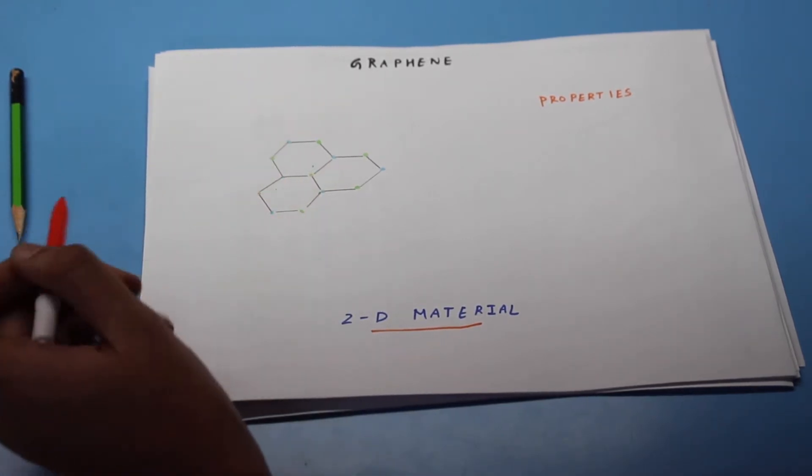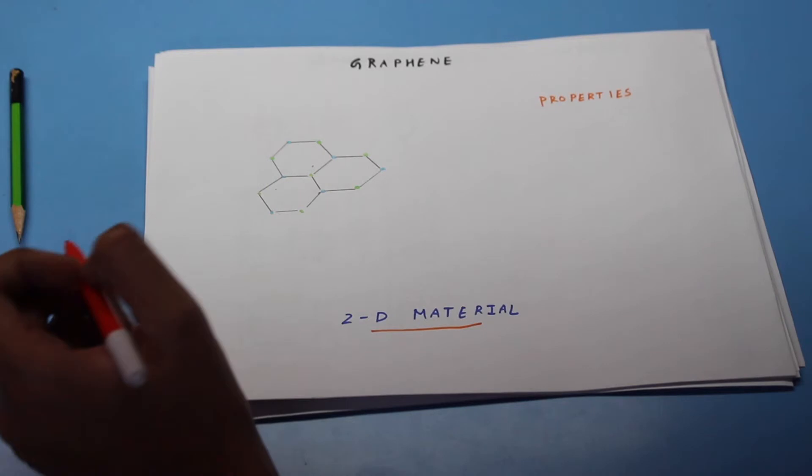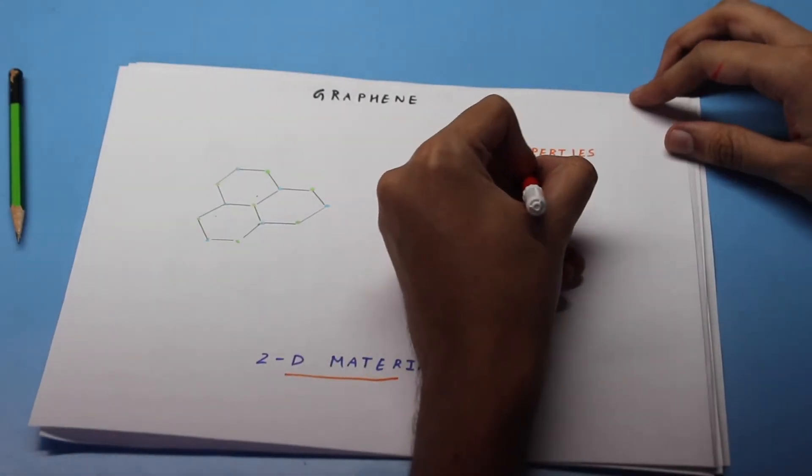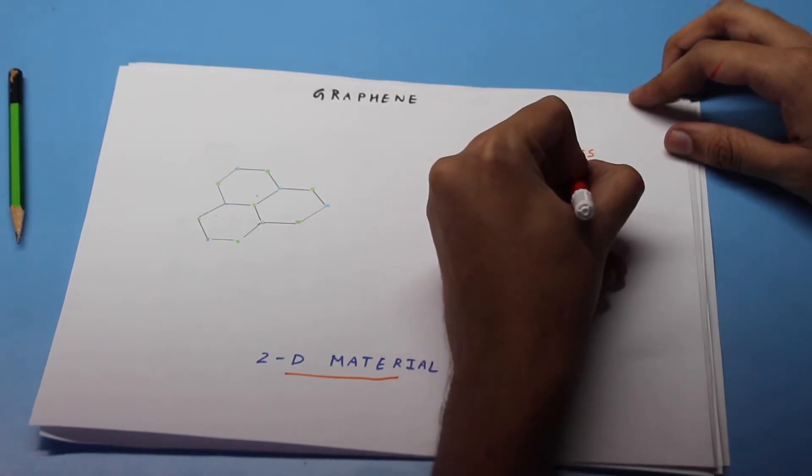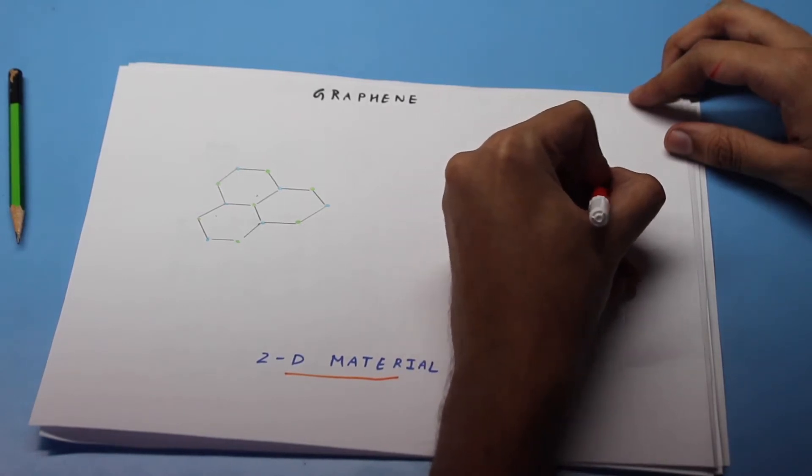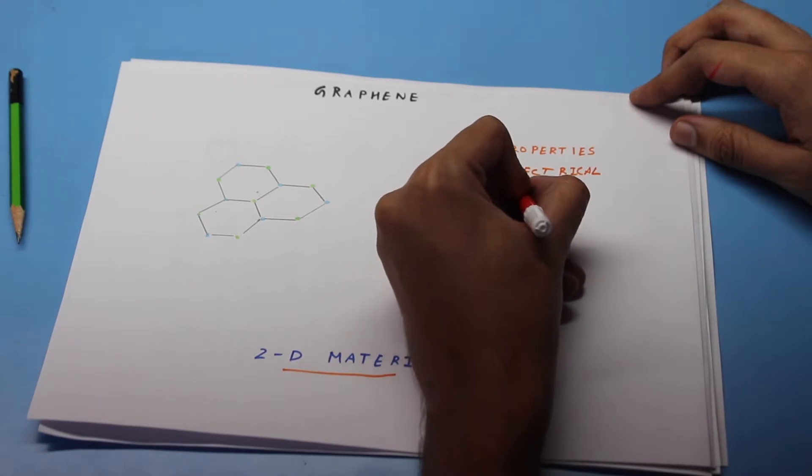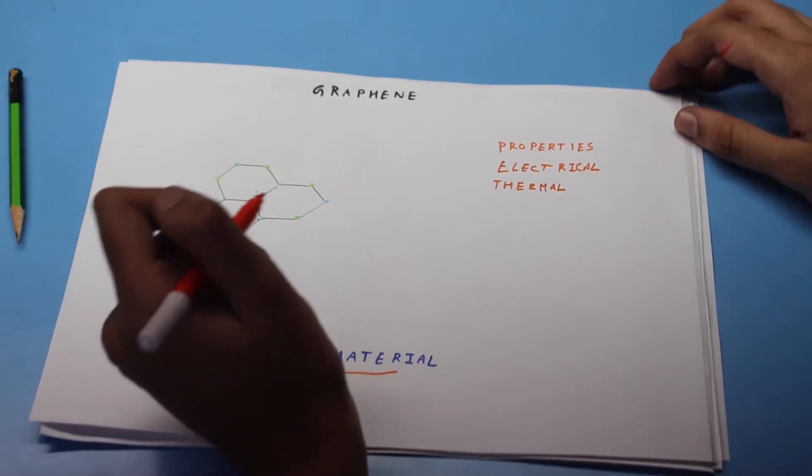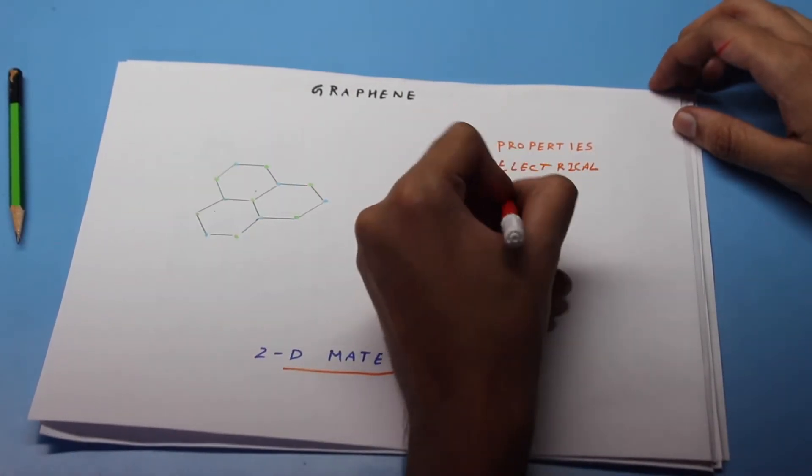Graphene is highly studied material because of its excellent electrical conductivity. It also has excellent thermal conductivity and it is known for its high tensile strength.